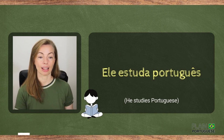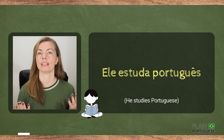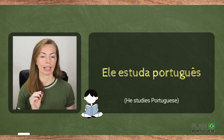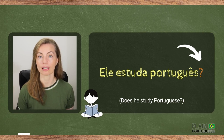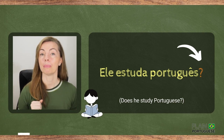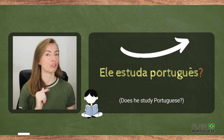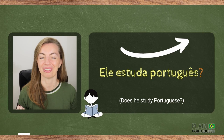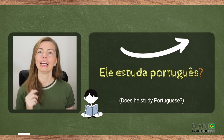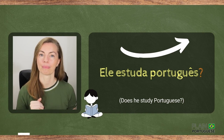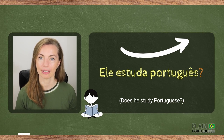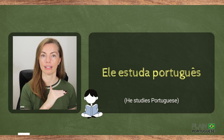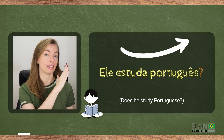If you want to make an affirmative sentence a question, it's even easier. When writing, simply place a question mark at the end of the sentence. But when speaking, don't forget to raise the intonation at the end. So affirmative: Ele estuda português. Question: Ele estuda português? No need for auxiliaries or inversions — easy!